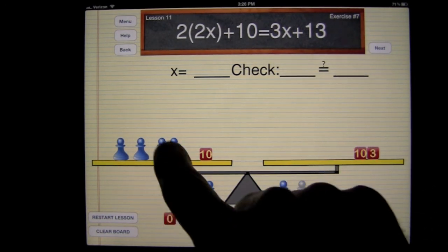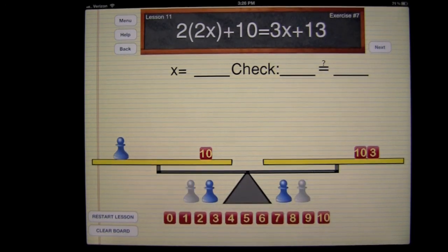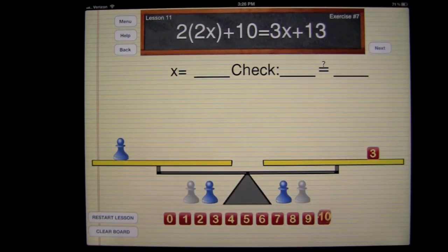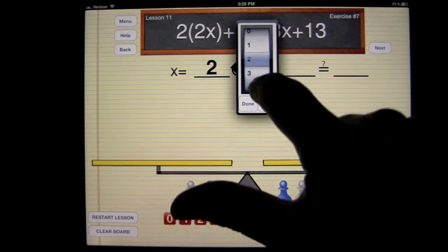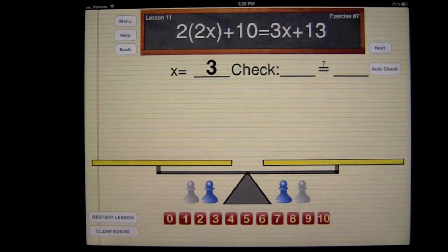Now we're going to remove 3 from here as well as here. And we're going to be left with 1. We're going to minus 10 there. And we're going to be left with 3. Now we'll go ahead and check this. Clear the board. We're going to put 3 for x. And once we're done there, we'll go ahead and solve this.